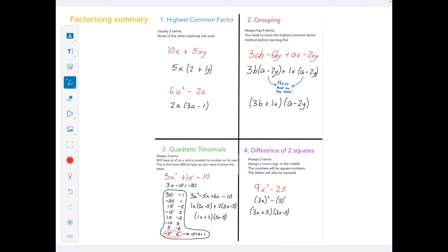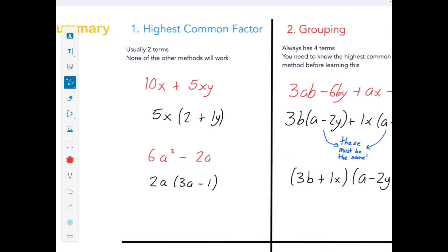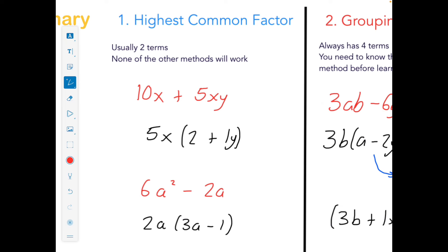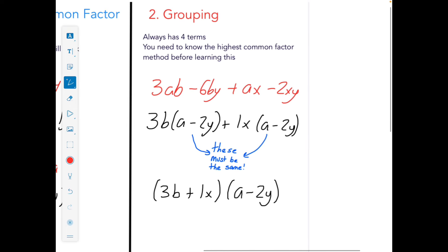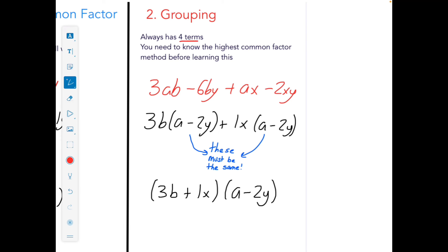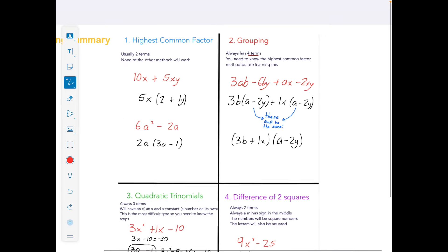Moving on to factorising. On the junior cycle course there are four different types of factorising. The question will just say factorize — you need to decide if it's highest common factor, grouping, quadratic trinomial, or difference of two squares. This is the summary sheet — I'd advise pausing here and writing down the key bits. If you can do all of these examples, you can do the whole section.